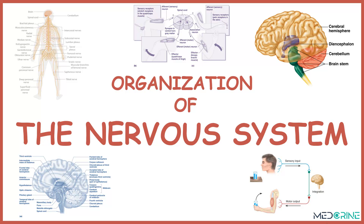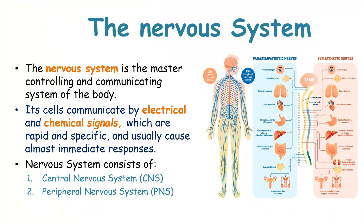Today we shall be looking at the organization of the nervous system. The nervous system is known as the master controlling and communicating system of the body. Its nervous cells communicate by electric and chemical signals which are rapid and specific and usually cause an almost immediate response.